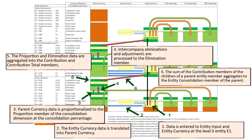The sum of contribution members of the children of the parent entity member aggregates to the entity consolidation member of the parent. In this example, the contribution total member of entity E1 populates the entity consolidation member of entity E2.